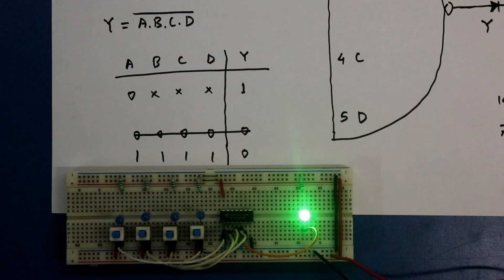Hello guys, in this video we are going to see 4 input NAND gate. Whenever all the inputs will be 1, then only we will get output as 0.